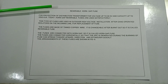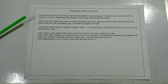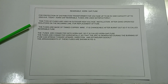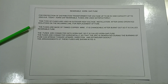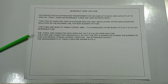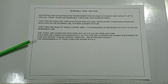Rewireable horn gap fuses are used for the protection of distribution transformers for voltages up to 66 kV and capacity up to 2500 kVA. These fuses are used in outdoor high-voltage installations after gang-operated isolators on the incoming line. The fuse element is made of tin wire, which is replaceable after burning out — hence it is called a rewireable fuse. The fuses are connected horizontally with a horn gap so that the arc generated during fuse burning spreads upward and is extinguished quickly.